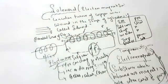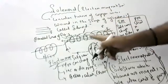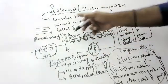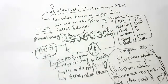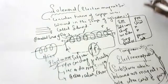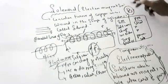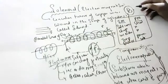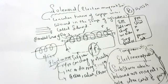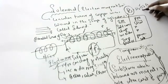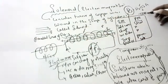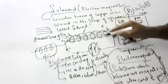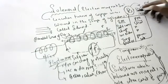In the exam, when a question comes on solenoid, draw the figure given in the textbook. The definition: circular turns of copper wire wound in the shape of a cylinder is called a solenoid. The magnetic field created in the solenoid depends on NIA — where N is the number of turns, I is the current, and A is the cross-sectional area. The formula is B = μ₀NIA.